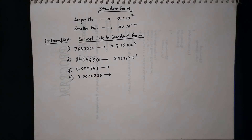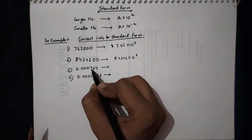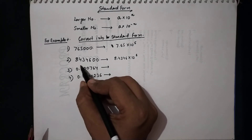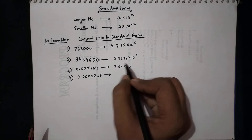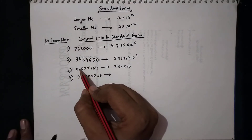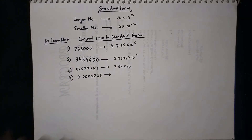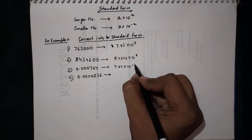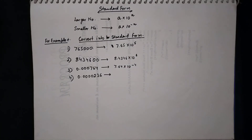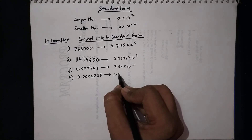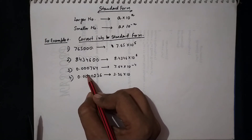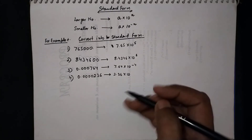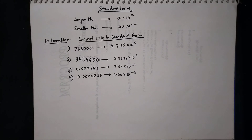For smaller values, we shift the decimal to the right. Shifting 4 places gives 6.64 × 10^(−4), and shifting 5 places gives 2.36 × 10^(−5). The power is negative for smaller numbers. Now we'll do some questions converting numbers to standard form.